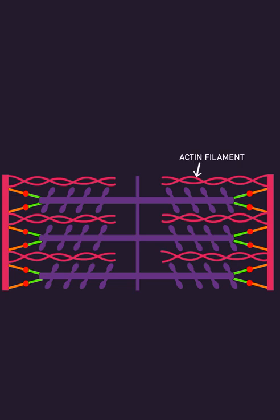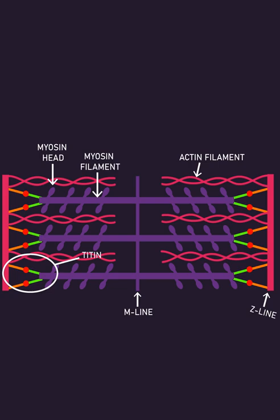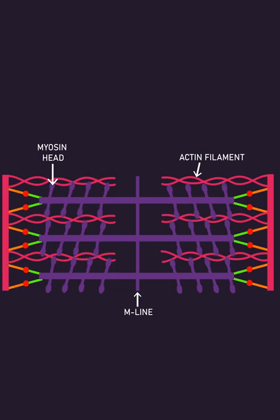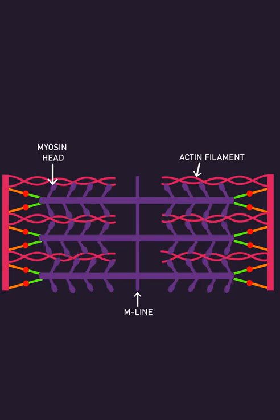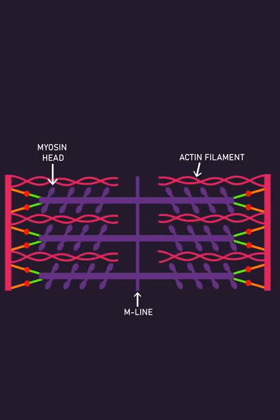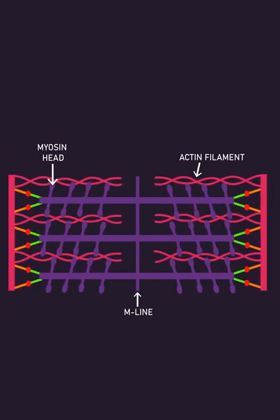It consists of an actin filament, a myosin filament that contains myosin heads, an M line, a Z line, and a molecule called titin which connects the myosin filament to the Z line. When myosin heads extend out from the myosin filament and pull the actin filament towards the M line, force is generated.